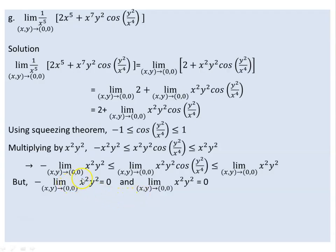The negative of the limit of x²y² is 0, and the positive limit of x²y² is also 0, both by direct substitution as (x, y) → (0, 0). So both bounds equal 0.